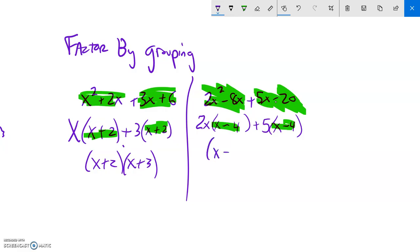So if I take out an x minus 4, what's left is 2x plus 5. And that is factored completely. Let me do another one.